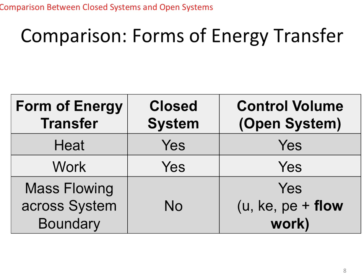Let's do a comparison using this table. For a closed system and a control volume or open system, heat and work are both present — both are possible for both types of systems. However, the form of energy transfer due to mass flowing across a system boundary is only possible when you have a control volume or open system. This type of energy transfer is not possible for a closed system.